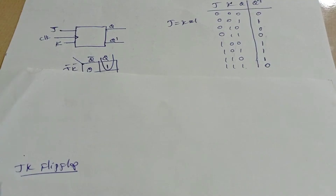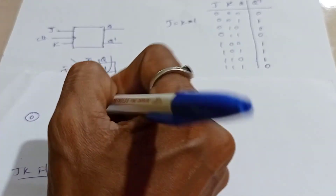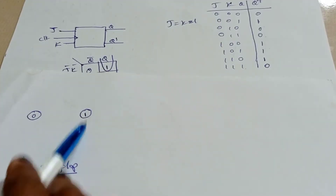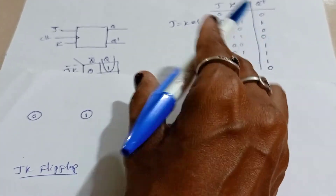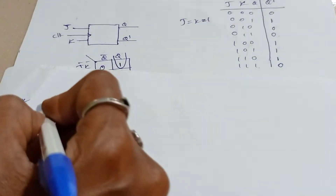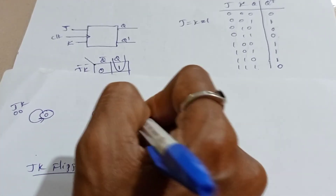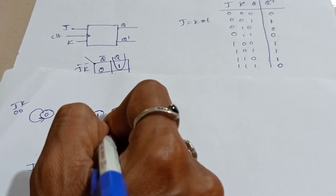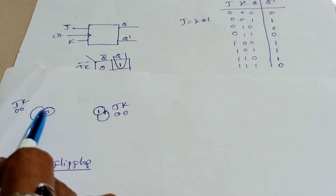Finite state machine for JK flip-flop. Again, considering two states: 0 and 1. When J and K are both 0, it will be in the same state — that is JK = 00 makes a loop from the particular state, remaining in the same state.